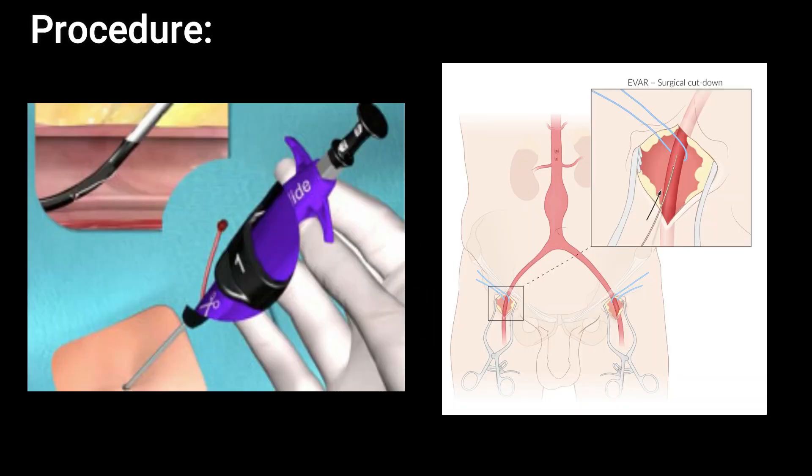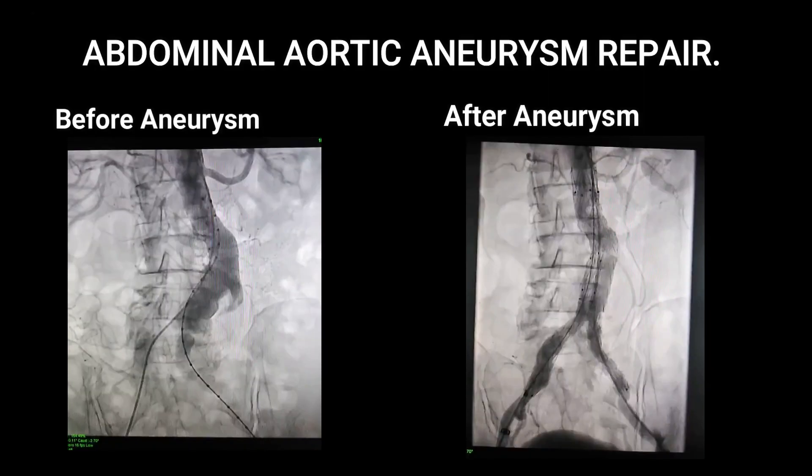After checking with the aortogram, if everything looks fine, the sheaths from both common femoral arteries are closed using Perclose devices, or the cut-down is closed by suturing and dressing applied to prevent bleeding, and an appropriate dose of heparin is maintained by checking the activated clotting time.